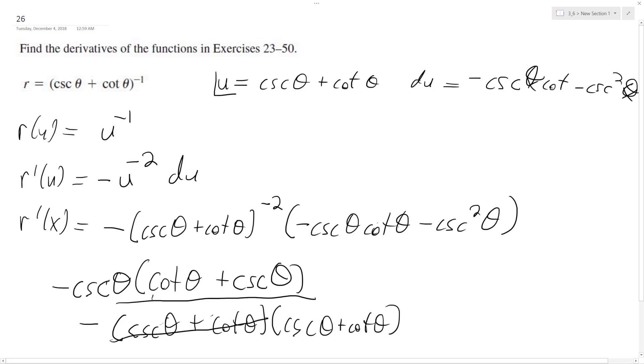So one of these cancels out, and the negatives cancel out, and that's how we're left with just cosecant theta over cosecant theta plus cotangent theta.